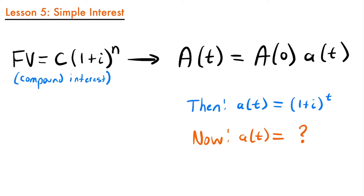In our very first lesson, we looked at compound interest and came up with this equation, where the accumulation, or future value of an investment, equals the initial deposit times 1 plus the interest rate to a power of n, where n is the number of periods. There's also an alternate form: the accumulation at time t equals the accumulation at time 0 times the accumulation factor, where the accumulation factor equals 1 plus i to the t power.